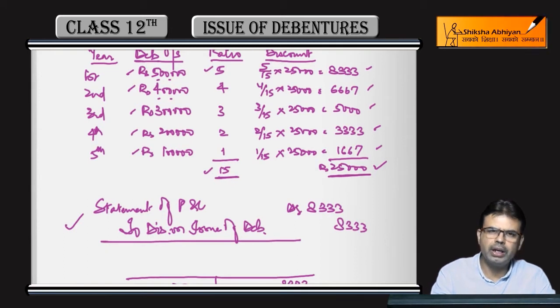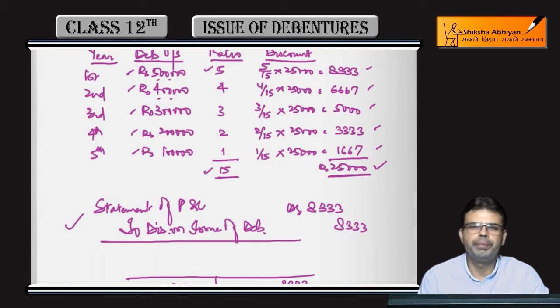In this question I redeemed Rs. 1,00,000 each year, so the ratio was 5, then 4, then 3. If I had redeemed Rs. 2,00,000 in the first year, then the balance would be Rs. 3,00,000 remaining, whatever you redeem next keeps getting subtracted, so the ratio will be accordingly adjusted. Okay, done.